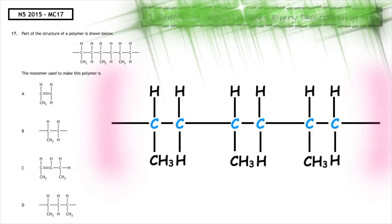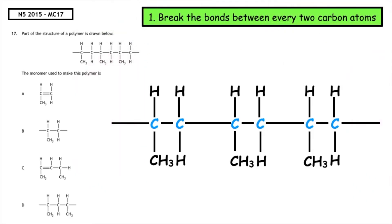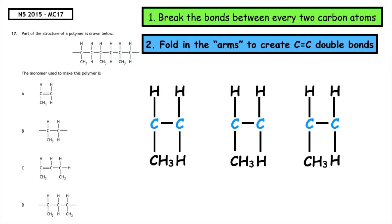Step number one: we want to break the bonds between every two carbon atoms. We then fold in the arms to create the carbon-to-carbon double bonds. So the correct answer to this question is multiple choice answer A.